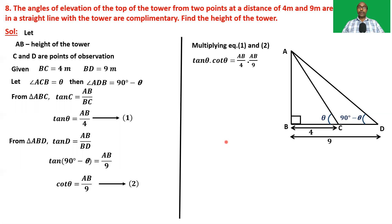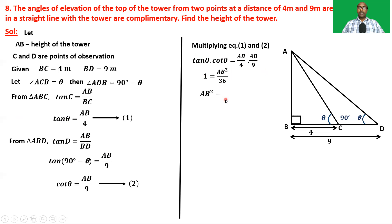Multiplying these two equations, we get tan theta × cot theta equals (AB/4) × (AB/9), that is 1 equals AB² by 36, since tan × cot equals 1 as they are reciprocals of each other. So AB² equals 36, and AB equals √36, which equals 6. Therefore AB is the height of the tower.